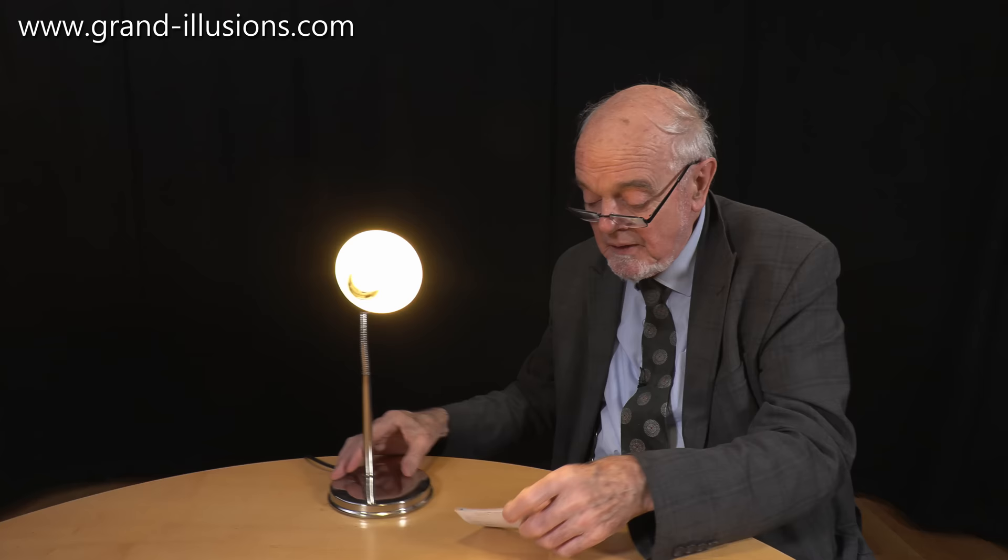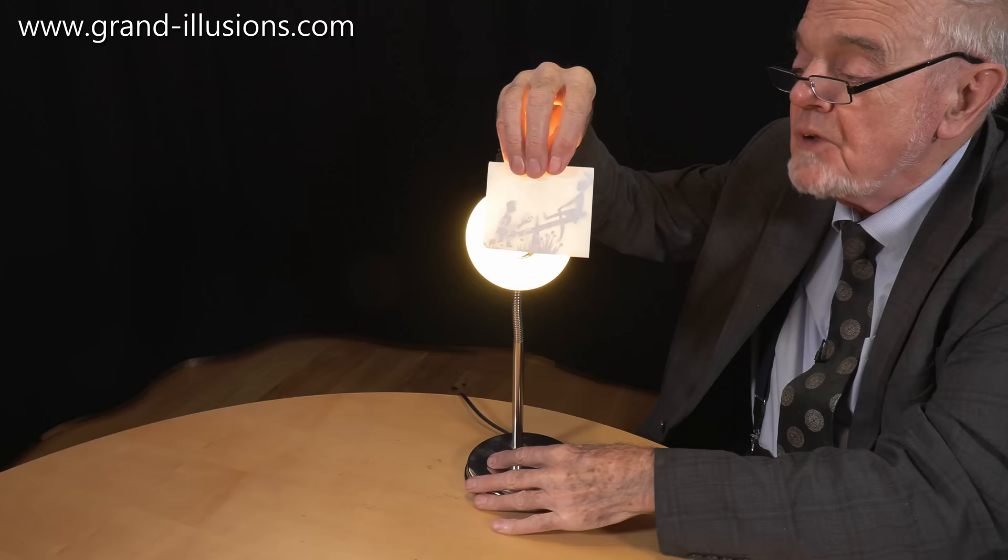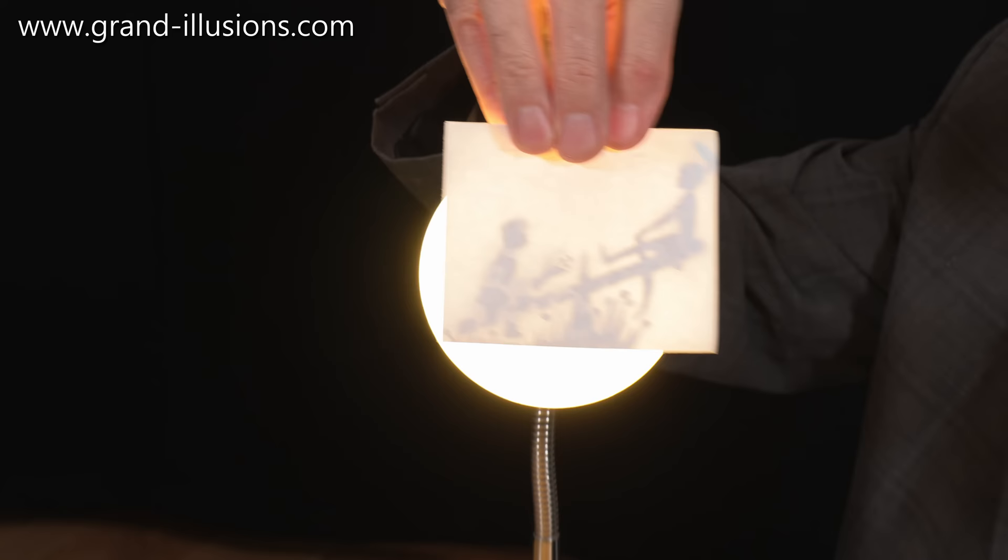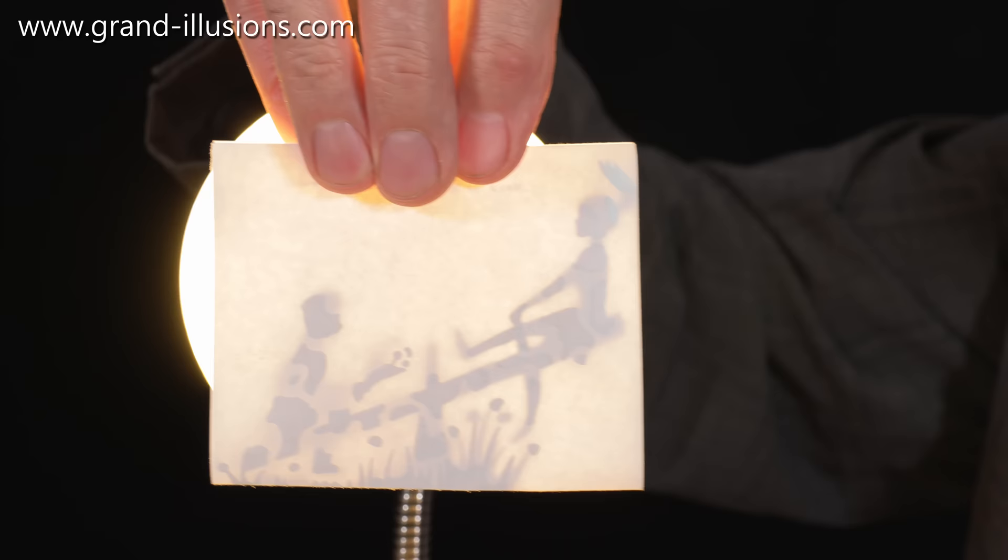So I've got a nice strong lamp here, we'll shine it there. Now we bring this forward in front of the lamp, you look through two layers of paper, add a nice silhouette there, and the silhouette is lovers on a seesaw.